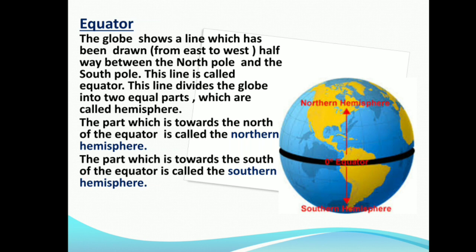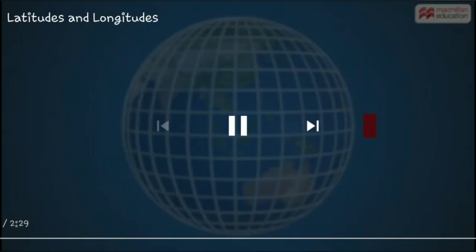The part which is towards the north of the equator is called the Northern Hemisphere. The part which is towards the south of the equator is called the Southern Hemisphere. Now we will move to our next topic.